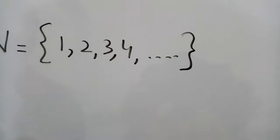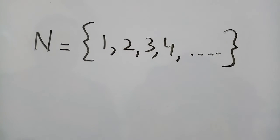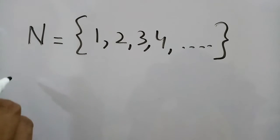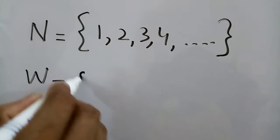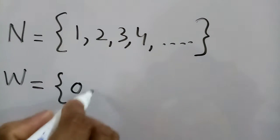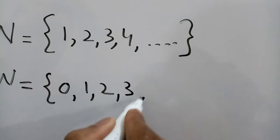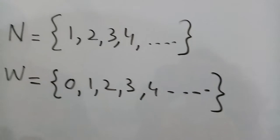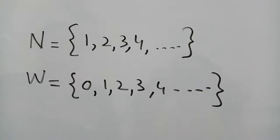Whole numbers include natural numbers and 0, and they are represented by capital W, and they are 0, 1, 2, 3, 4 and so on.